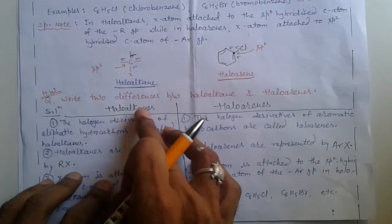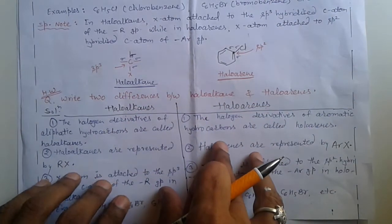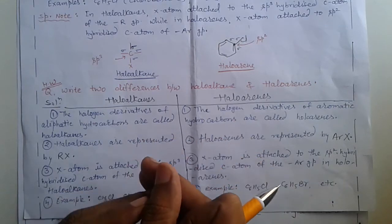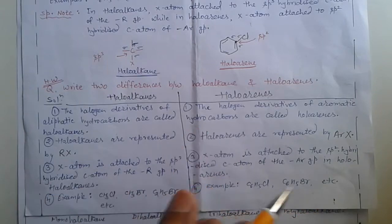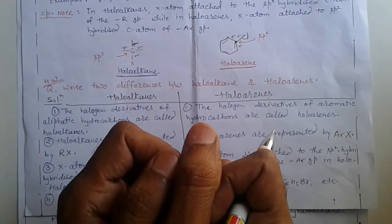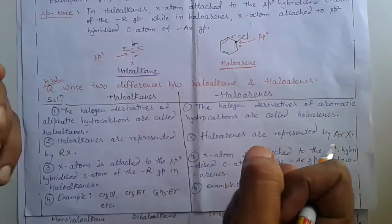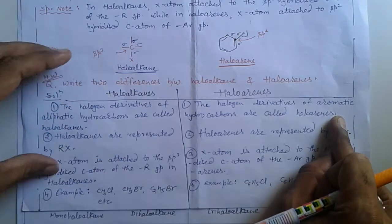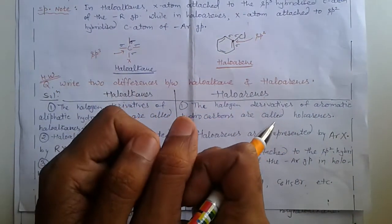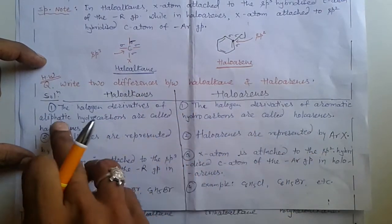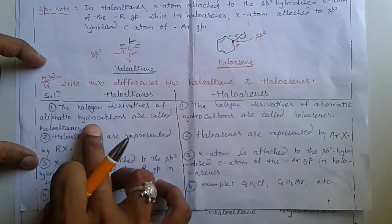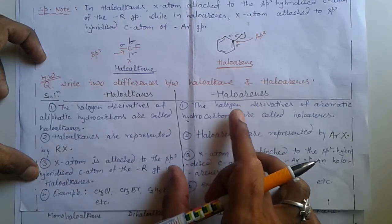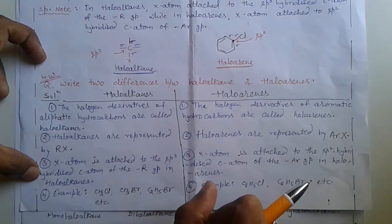Second question: write two differences between Halo Alkane and Halo Arene. First difference: the halogen derivatives of aliphatic hydrocarbons are called Halo Alkane, and the halogen derivatives of aromatic hydrocarbons are called Halo Arene. Second difference: Halo Alkanes are represented by RX, and Halo Arenes are represented as ARX.